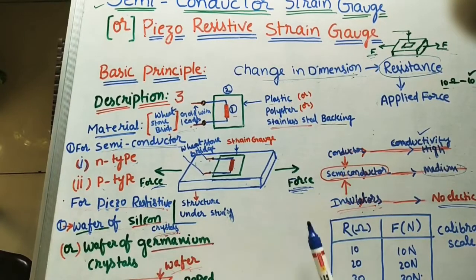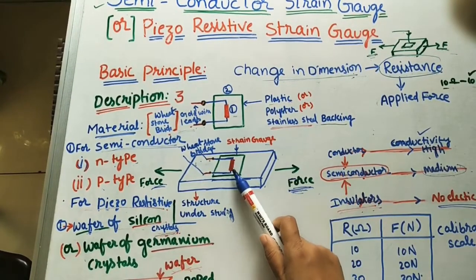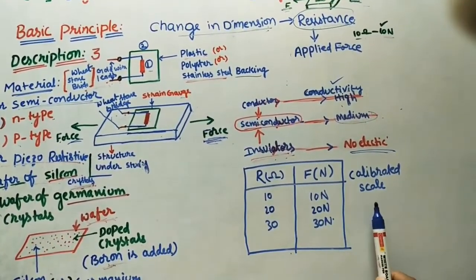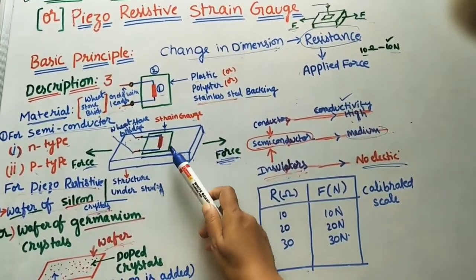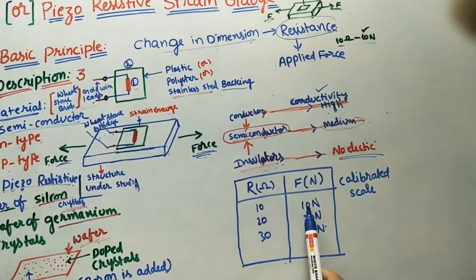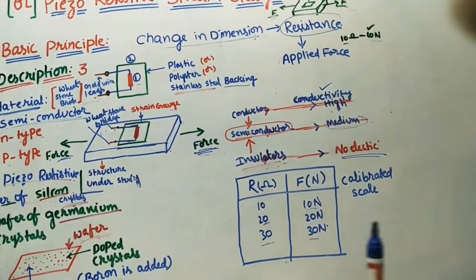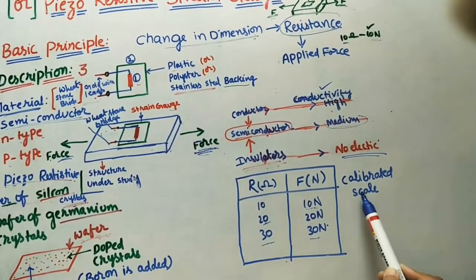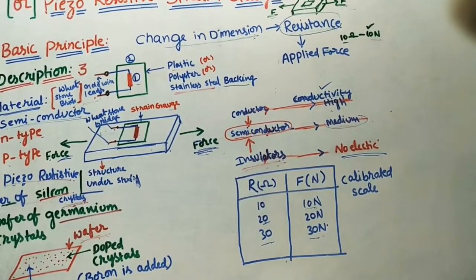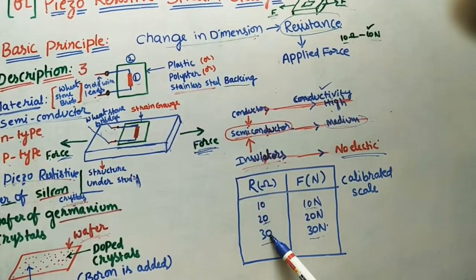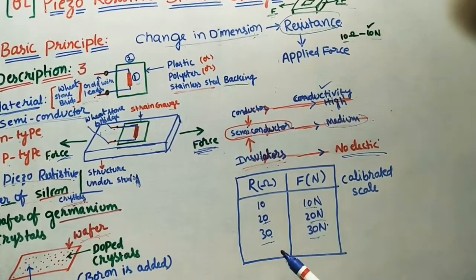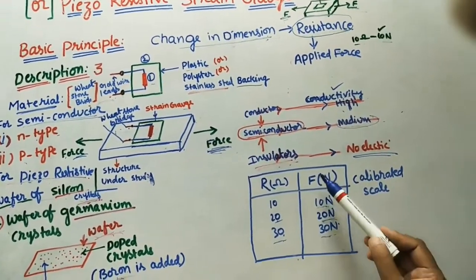The change in resistance gives the applied force value through a calibrated scale prepared for each gauge. For example, if the Wheatstone bridge shows 10 ohms, the applied force is 10 newtons; if it shows 30 ohms, the force is 30 newtons. If it gives a value of 25 ohms, the applied force is 25 newtons — the mean of those two values. This is how we find applied force using the calibrated scale.